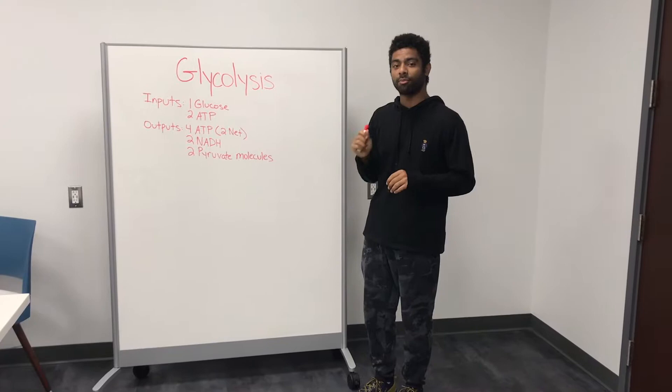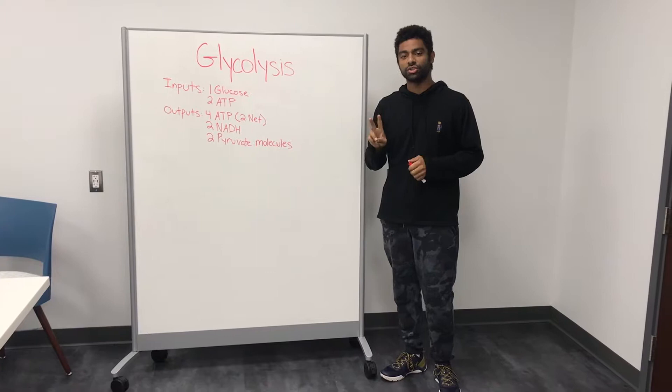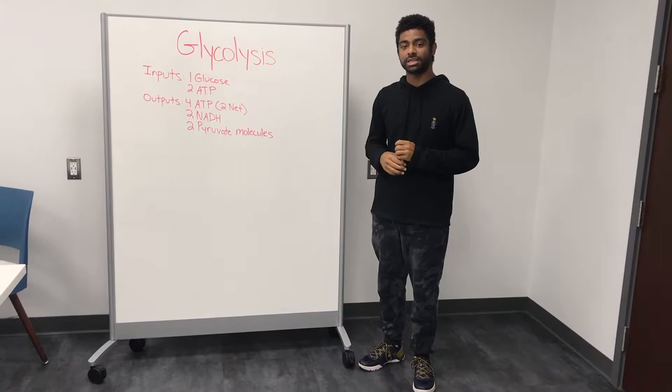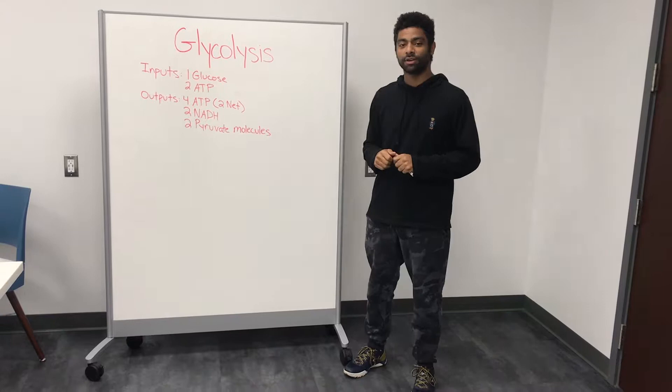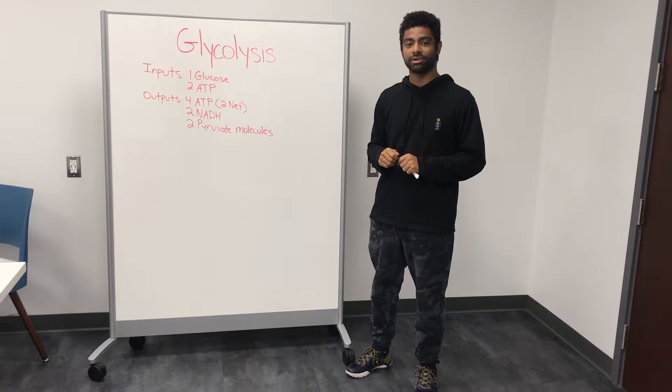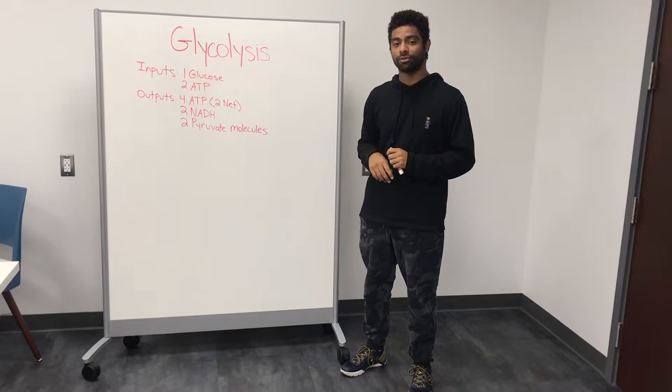We're going to be talking about the breakdown of sugar, primarily glucose. What do you need for glycolysis? One glucose and two ATP. Glucose is a very stable molecule, and in order to destabilize it, you need to phosphorylate it — and those phosphates come from ATP. When you phosphorylate glucose, you get fructose 1,6-bisphosphate, which quickly breaks down into two G3P glyceraldehyde-3-phosphates, which are then broken down into two pyruvate molecules.